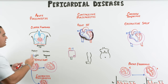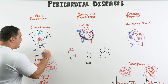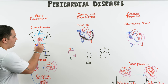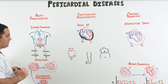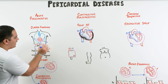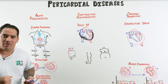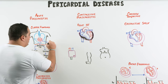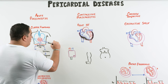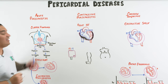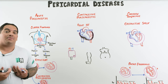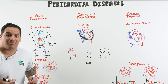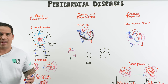When the pericardium becomes inflamed, the layers rub against each other during the cardiac cycle, producing a classic friction rub. Since acute pericarditis is a clinical diagnosis, if a patient presents with chest pain that occurs during breathing, is positional, and has an associated friction rub, that is almost completely diagnostic of pericarditis.